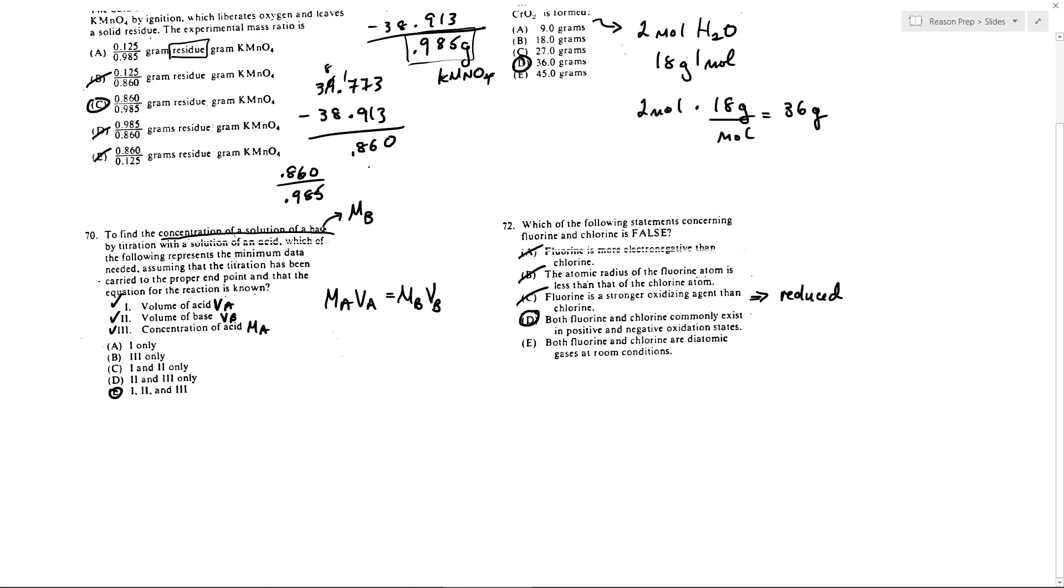And just checking E, fluorine and chlorine are diatomic. Yes. So these are going to be F2 and Cl2 at room temperature at STP conditions. So cross out E is true. So it's not the answer. And so the answer would be D.